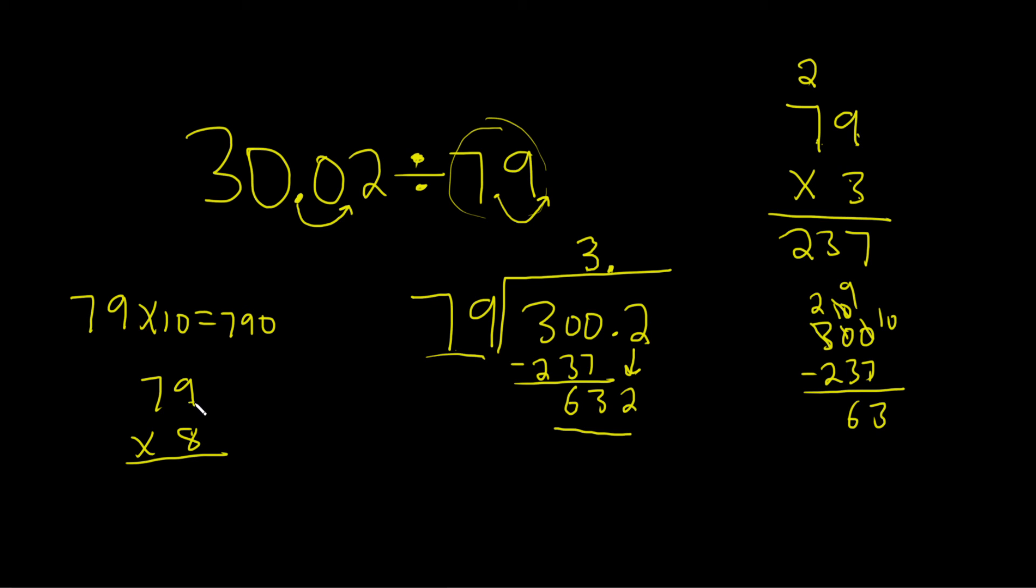8 times 9 is 72. You write down the 2 and carry the 7. 8 times 7 is 56. Plus 7 is 632. Yay, it worked. So we need an 8. So 8. 8 times 79 is 632.